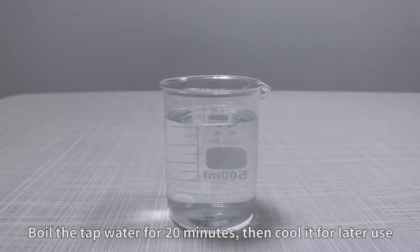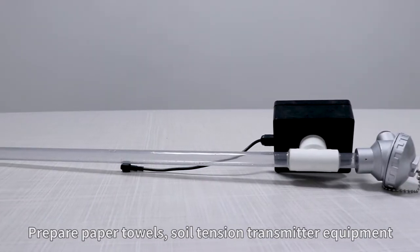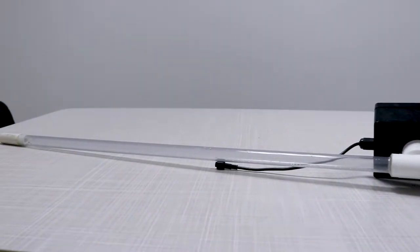Pour the tap water for 20 minutes, then pour it for later use. Prepare paper towels and soil tension transmitter equipment.